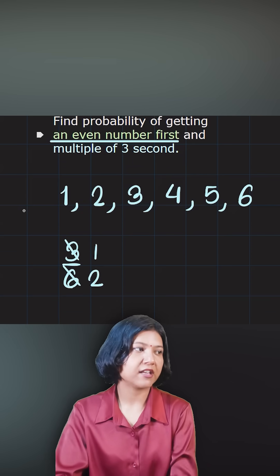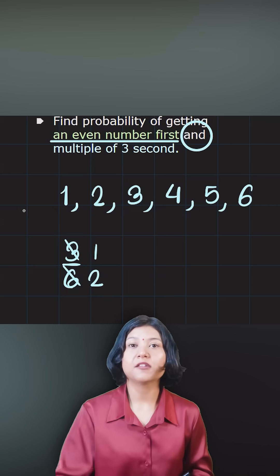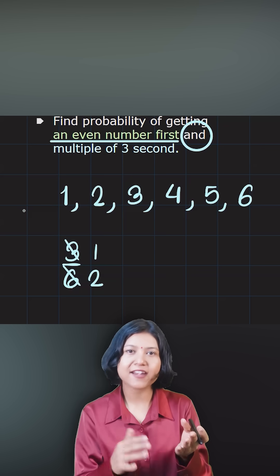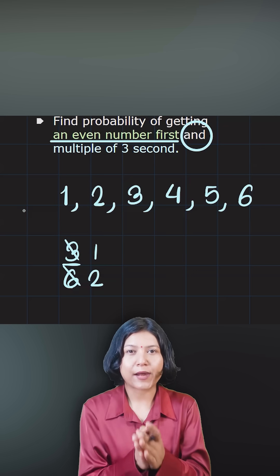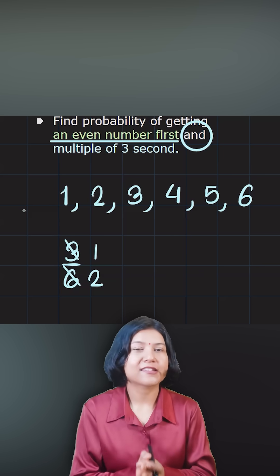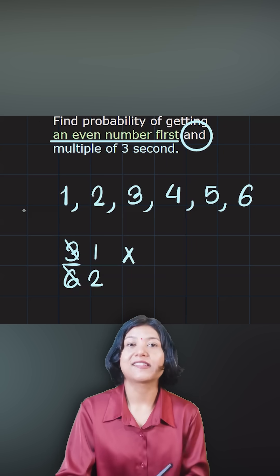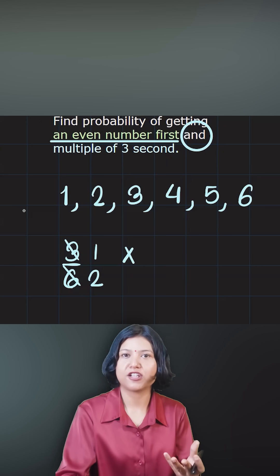Okay now question says one very important thing that's and. When the word and is used it becomes conditional. You want this and that. So in that case probability tells you or in this case what do we exactly do is we times it with the probability of the second scenario because it becomes conditional.